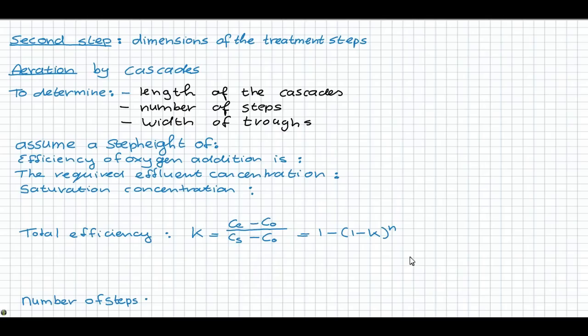The number of steps are determined by the desired total efficiency and the efficiency of an individual step. When we assume a step height of 0.4 meters, the efficiency of the oxygen addition is about 25%. You can find these values in table 3 on page 6 of the handout of aeration.